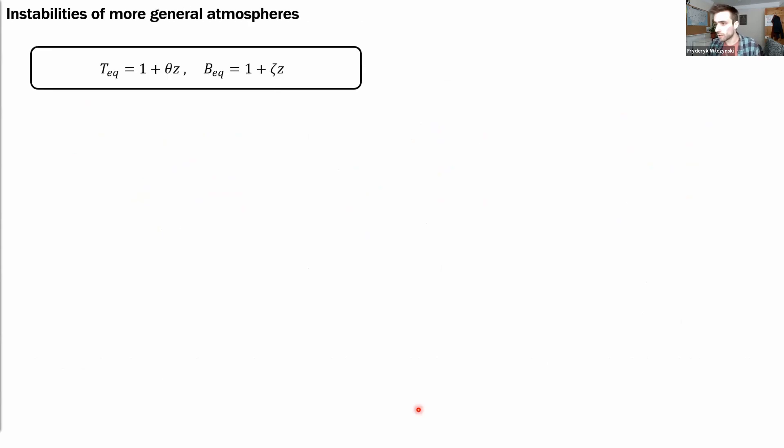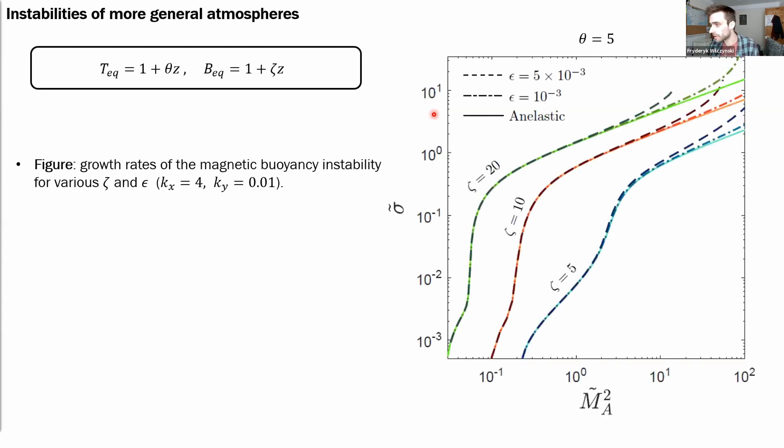We've also looked at the case of more general atmospheres, ones in which both temperature and field vary linearly with depth. And here again,